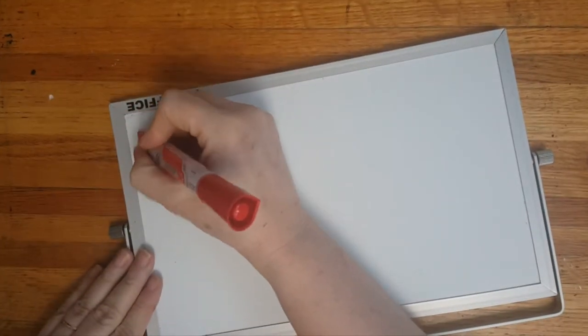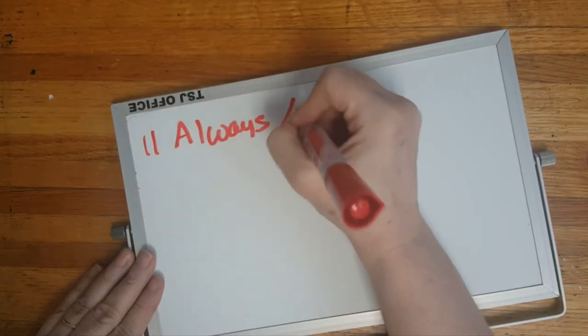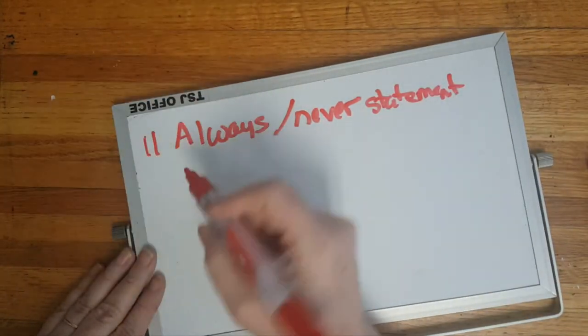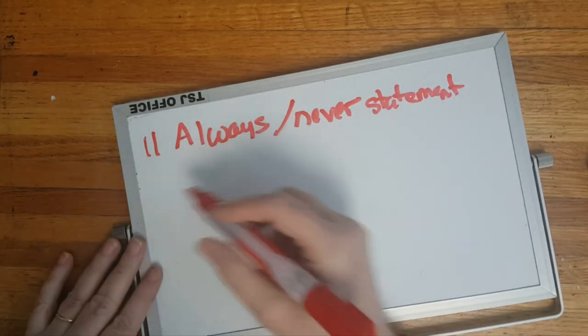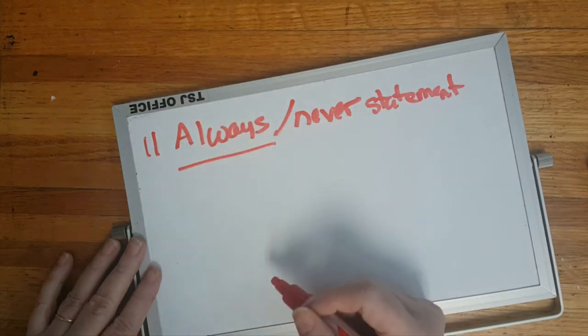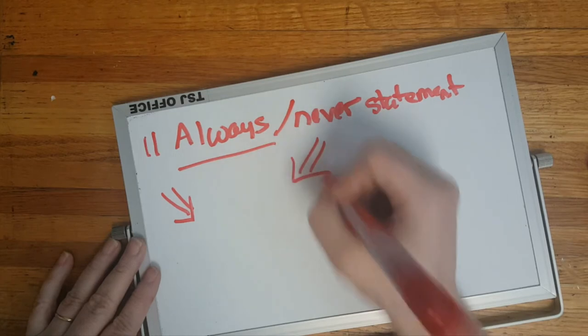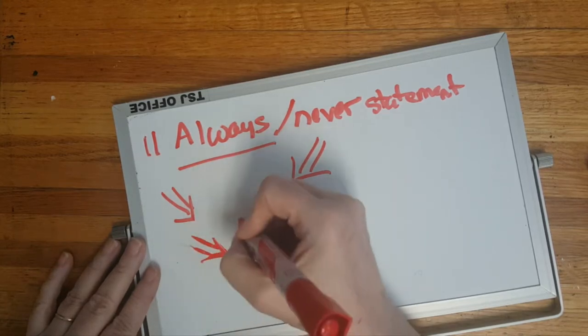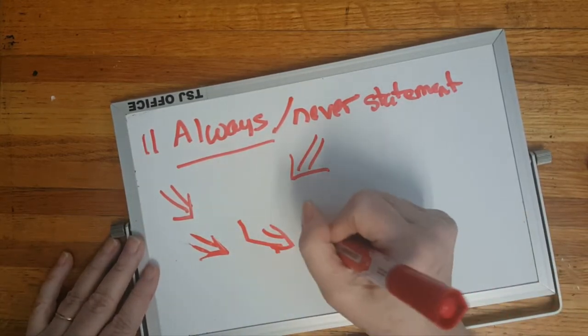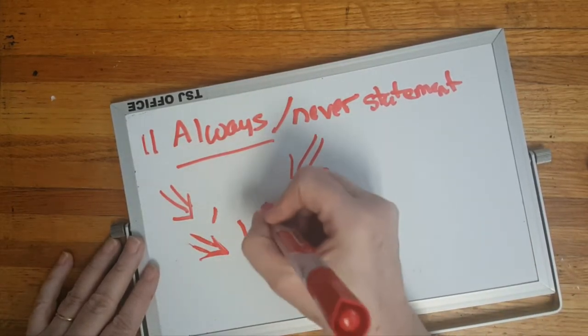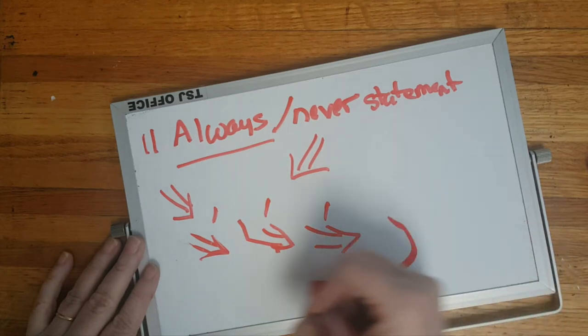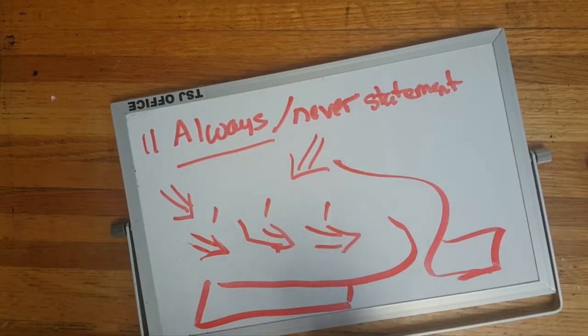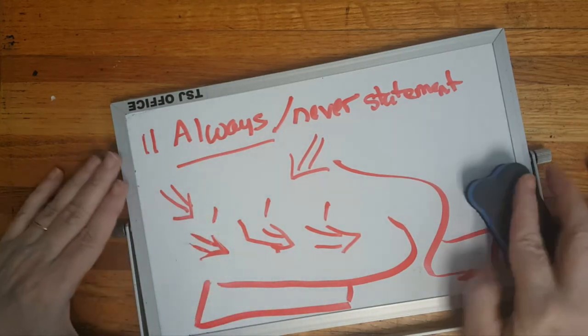Another thing that gaslighters do is always/never statements. Now I want to make clear here, none of these 13 points are always true for every gaslighter, but these are all common trends. So, you always do the thing I hate, you never do the thing I want. And if you come up with a counter example—wait, I didn't mean that, I meant this, which is a little bit different—and they're going to keep pushing you. When you say no, here's an example, here's an example, here's an example, until you finally give up and say okay, it's always, or okay, it's never. And that's how they get your whole perception of reality to shift.